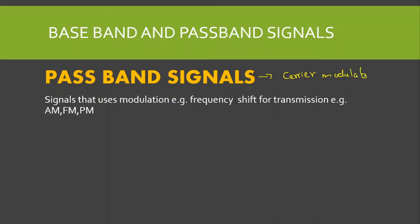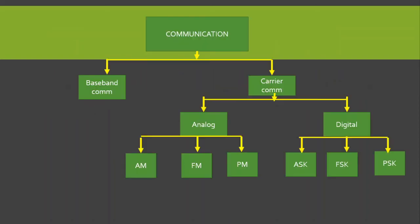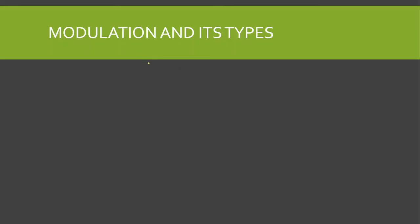Carrier communication uses modulation, in contrast to baseband communication which does not. Carrier communication can be further divided into analog and digital. In analog, we have amplitude modulation, frequency modulation, and phase modulation. In digital, we have amplitude shift keying, phase shift keying, and frequency shift keying.